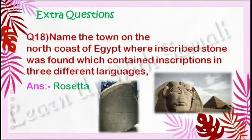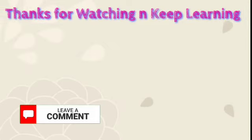Question number eighteen: Name the town on the north coast of Egypt where an inscribed stone was found which contained inscriptions in three different languages. The answer is Rosetta. Dear children, if you like the video, subscribe to my channel 'Learn Up With You Mali,' hit the like button, and leave your valuable comment. Thanks for watching and keep learning. See you next time.